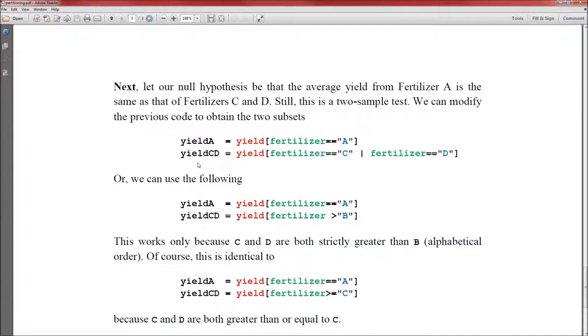Now if we want to do a little bit less typing, we could do yieldCD in two other ways. We could do yieldCD as the fertilizer is greater than B, because C and D are both greater than B in the alphabetical ordering. Or we could do greater than or equal to C, where C and D are also greater than or equal to C in the alphabet.